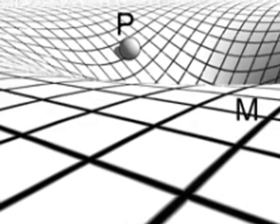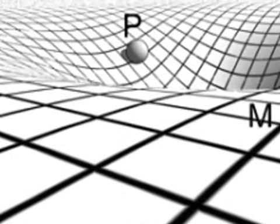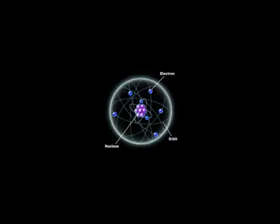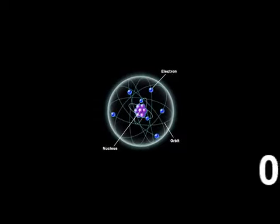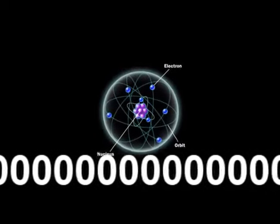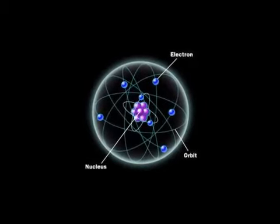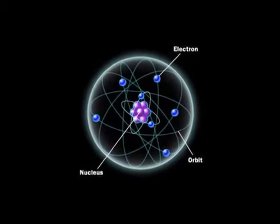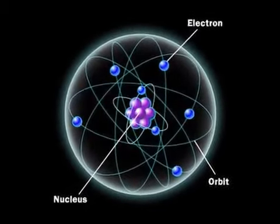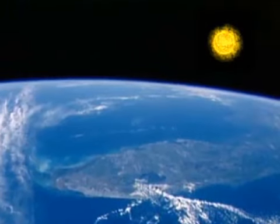A gravitational wave arriving on Earth will alternately stretch and shrink distances, but on an incredibly small scale — by a factor of ten to the negative twenty-first, or one sextillionth, for very strong sources. That's roughly equivalent to measuring a change the size of an atom in the distance from the Sun to the Earth.